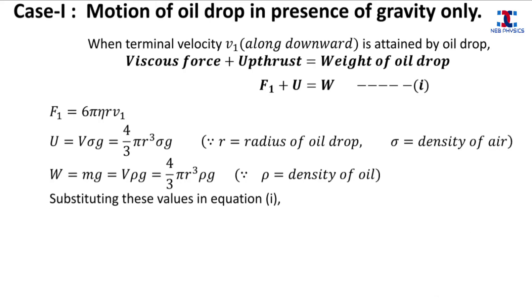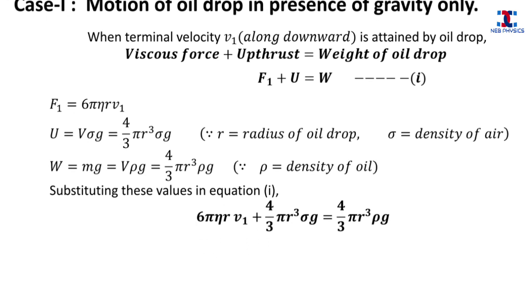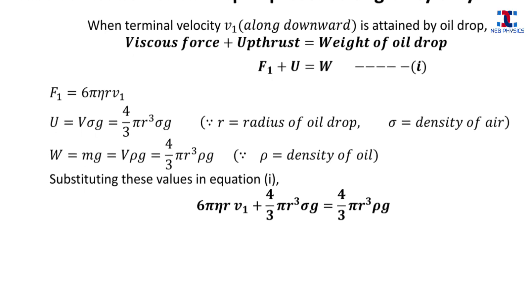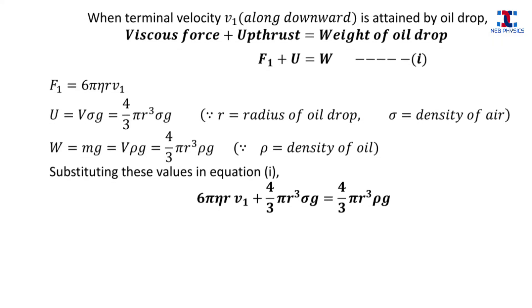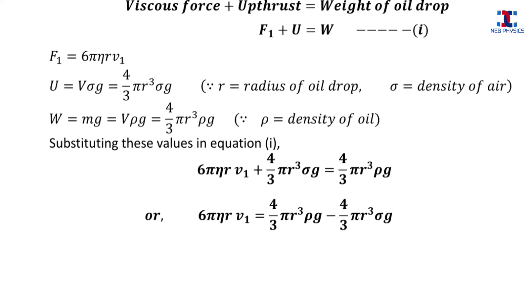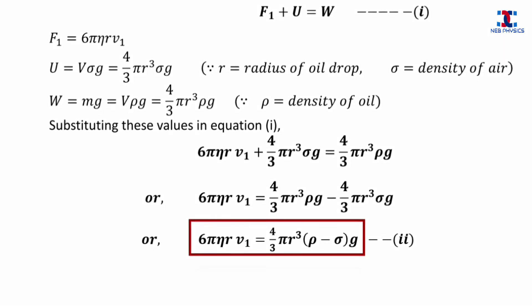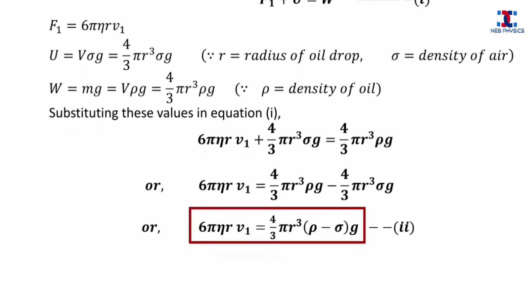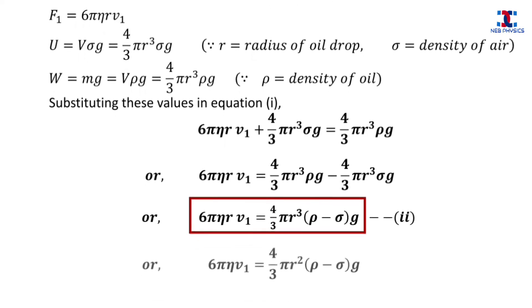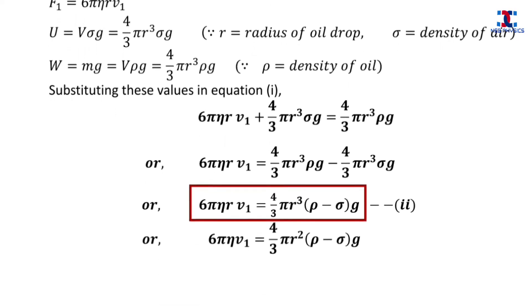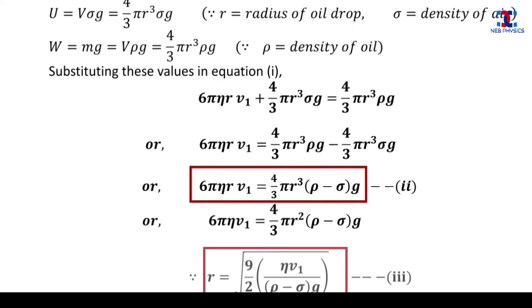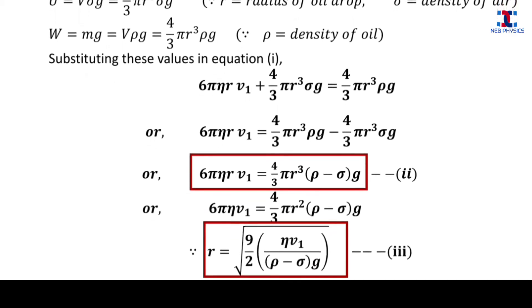Substituting these values in equation one, and rearranging by taking the common factor, we get the expression for 6πηrv1 — let this be equation two. Simplifying further, we finally get the expression for the radius r of the oil drop — let this be equation three.